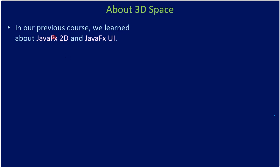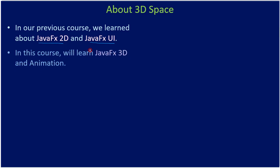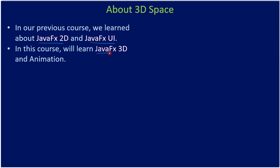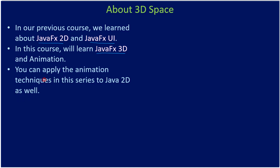In our previous courses we learned about JavaFX 2D as well as JavaFX UI. In JavaFX 2D we learned how to draw 2D shapes, and in JavaFX UI we learned how to create user interface elements. Both are considered as nodes, and even in 3D whatever we draw will be considered as a node. The node is presented in the scene, and the scene is attached to the stage. In this course we will learn JavaFX 3D and we will also see how to perform animation.